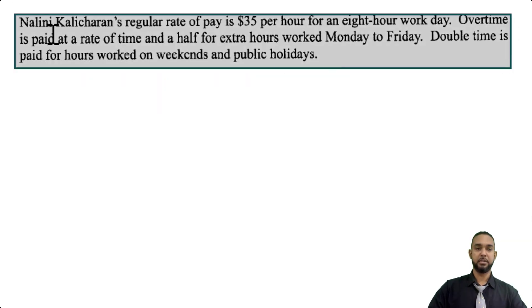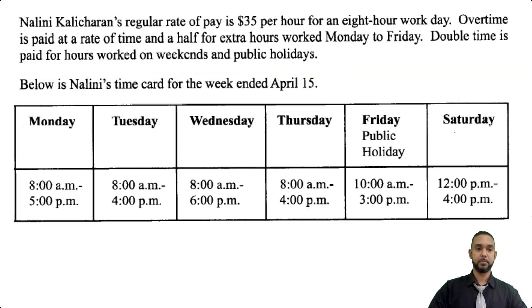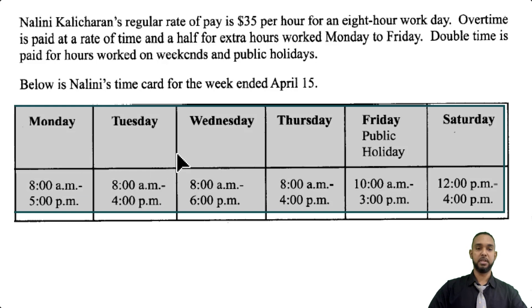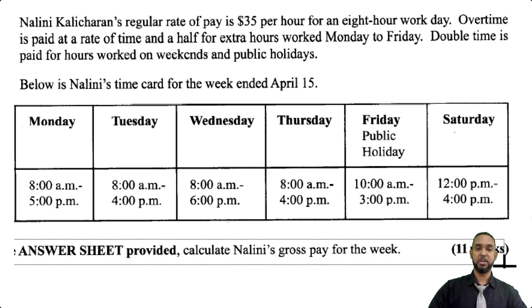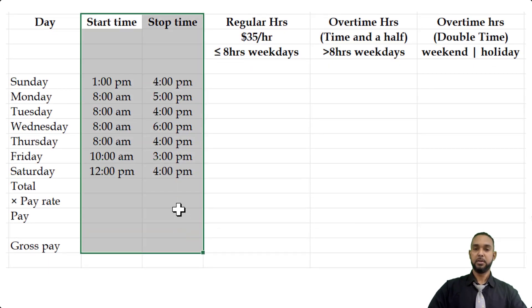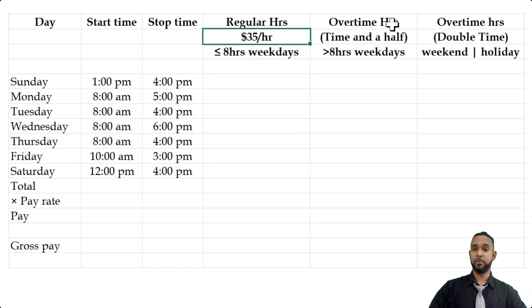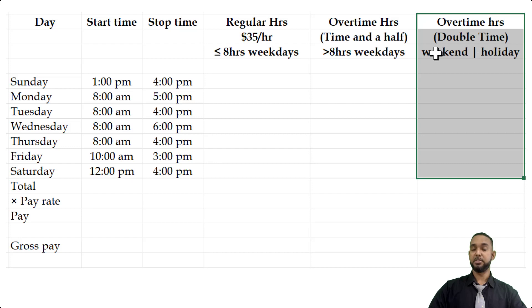Let's take a look at part B. They're telling us that the regular rate of pay is $35 per hour for an eight-hour work day. Overtime is paid at time and a half for extra hours worked Monday to Friday. Double time is paid for hours worked on weekends and public holidays. Below is Nalini's time card for the week ended April 15th. We have a time card showing the days and hours worked, and we need to calculate Nalini's gross pay for the week. I've included columns for regular hours, time-and-a-half hours, and double-time hours.